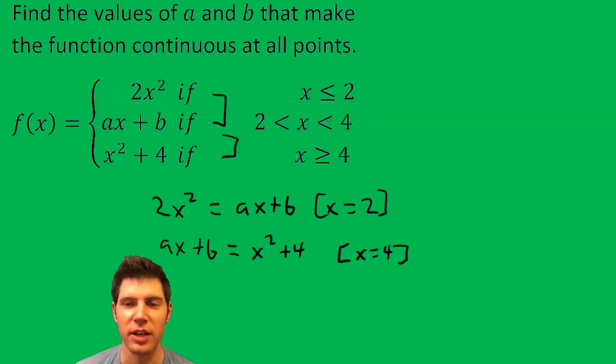So if that's the case, then it's continuous at all points. So let's plug in two for x. We end up with two squared is four times two is eight equals two a plus b.